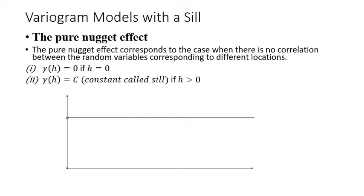The pure nugget effect is when we have no correlation between the random variables corresponding to different locations. If you have a variogram of this nature, it has a sill - it's not increasing and bounded, not decreasing and bounded, but it's a constant. All constant variograms of this nature we call the pure nugget effect.